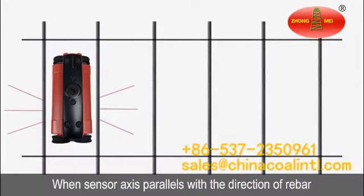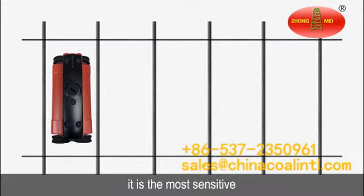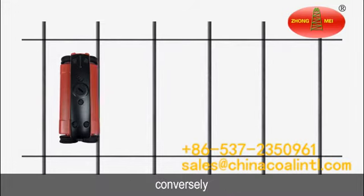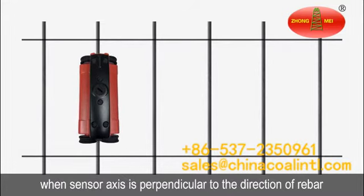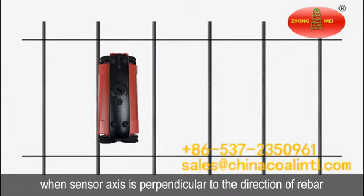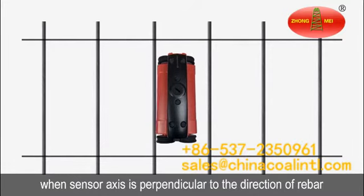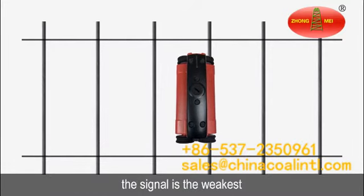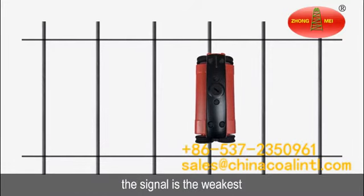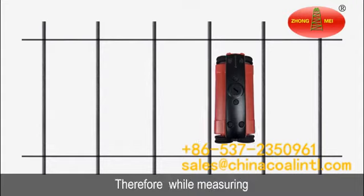When the sensor axis is parallel to the direction of the rebar, it is the most sensitive. Conversely, when the sensor axis is perpendicular to the direction of the rebar, the signal is the weakest. The sensor is RDN's.